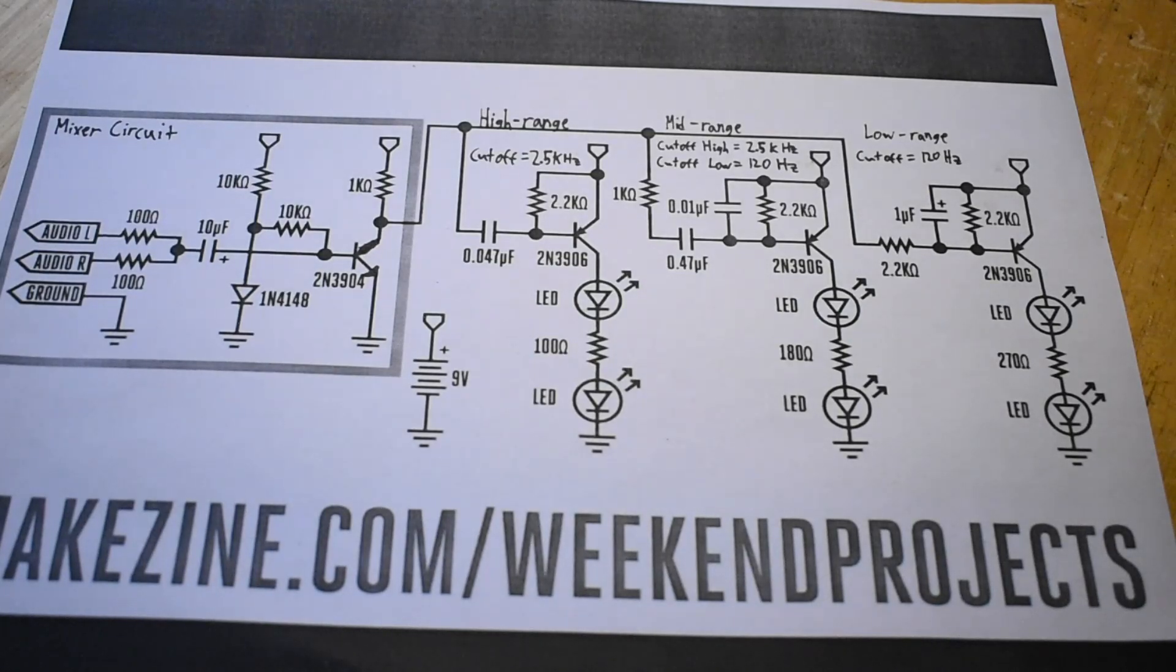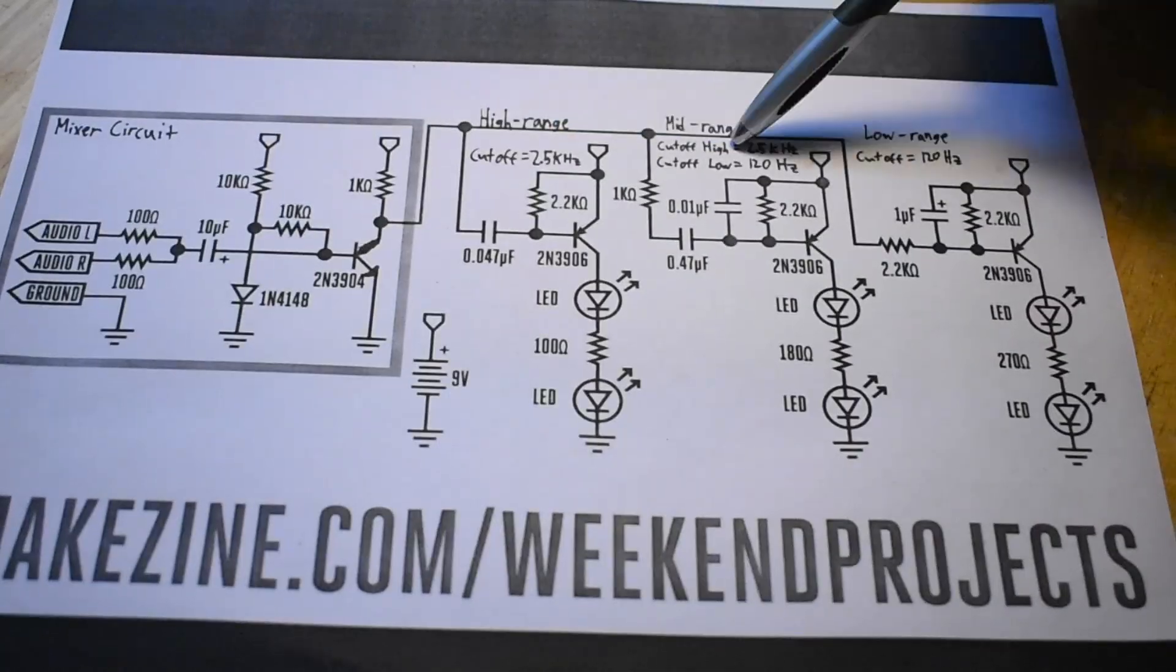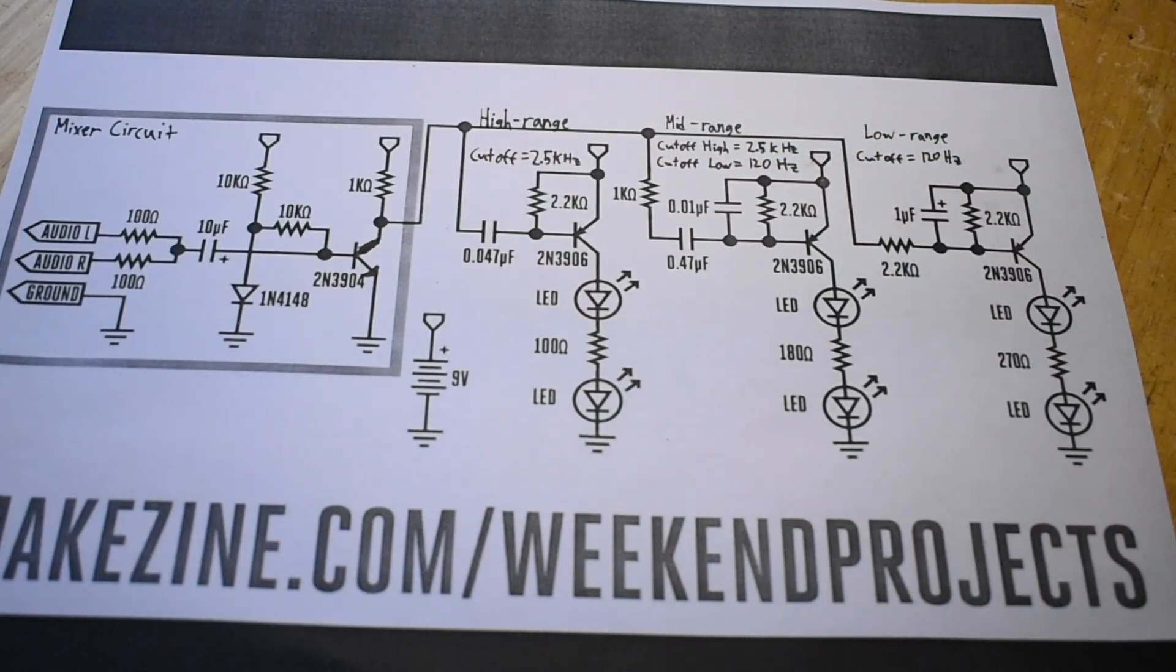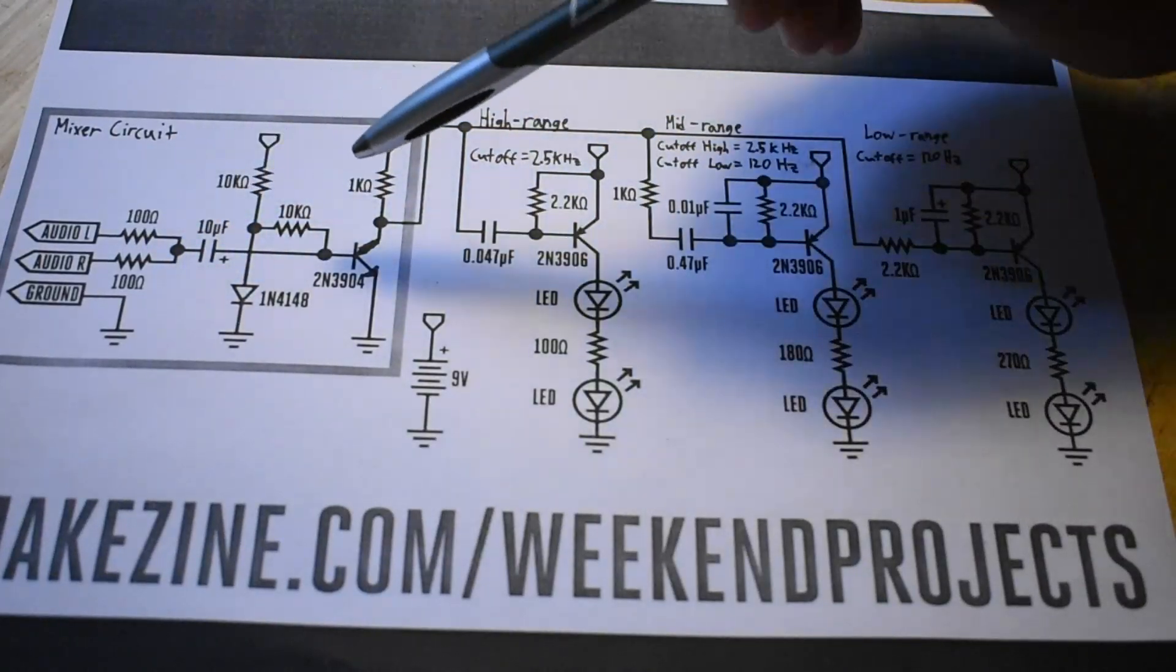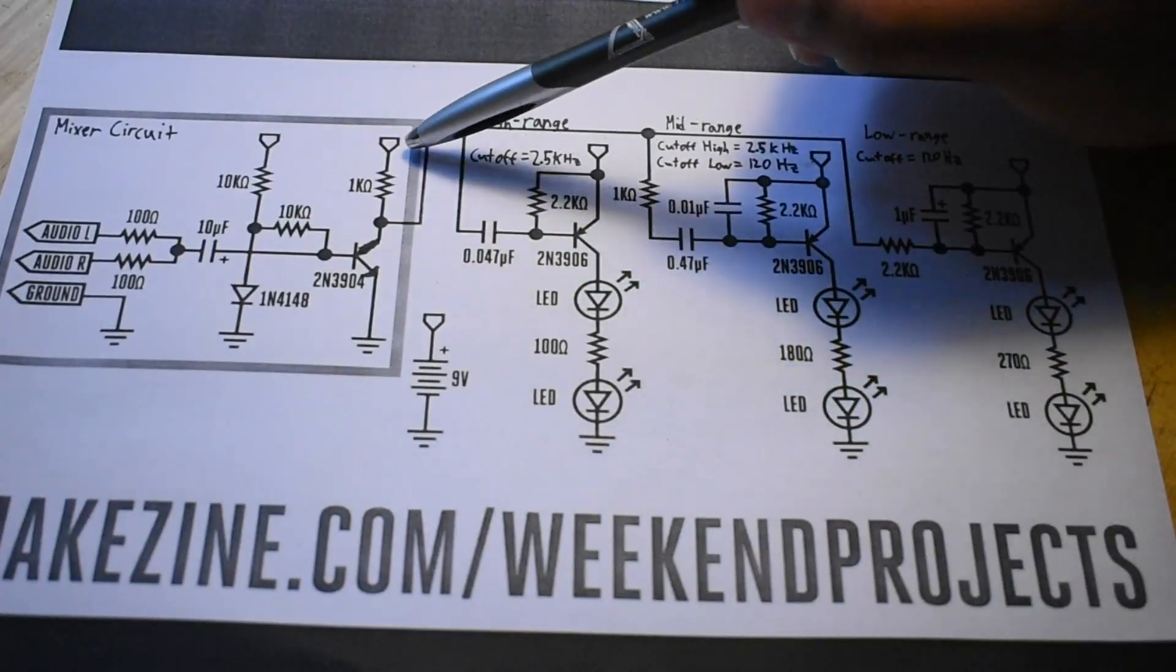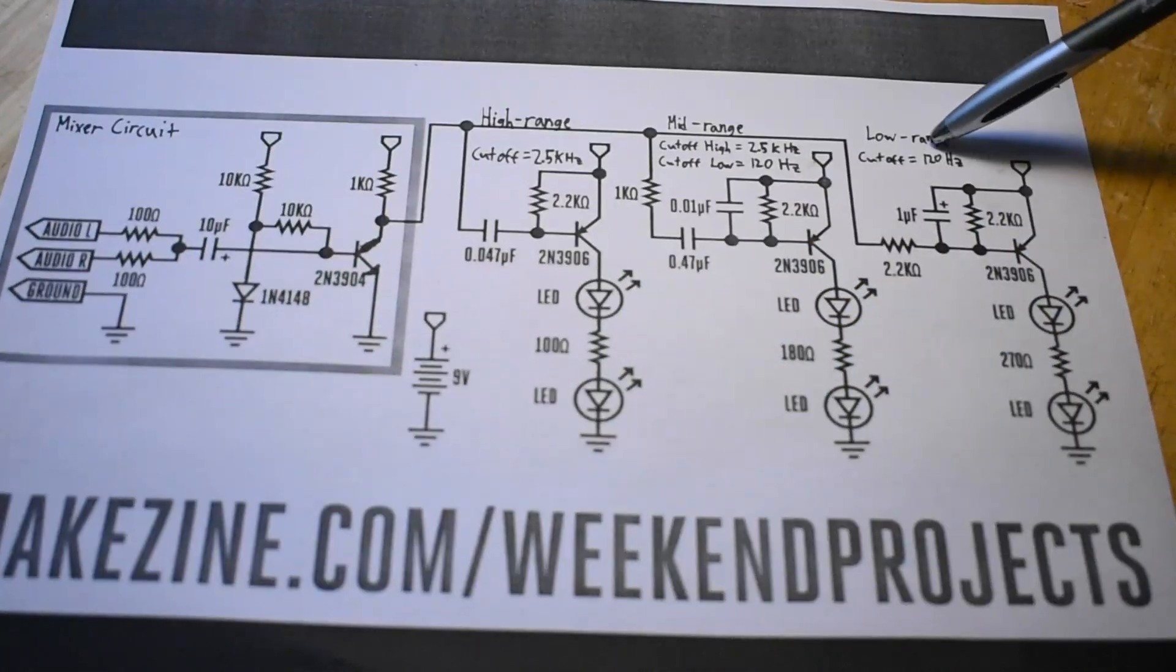Going into the circuit, we can see that there are four basic parts: the mixer slash preamp, the high range, mid range, and low range filters. The mixer circuit combines both audio channels and feeds it to the 2N3904, which then amplifies the signal. The amplified signal is then fed to all the filters.